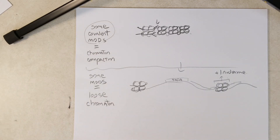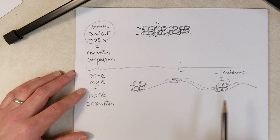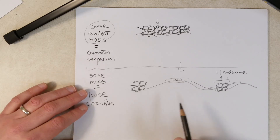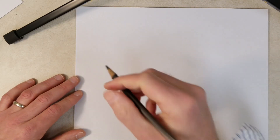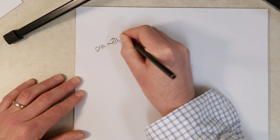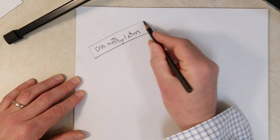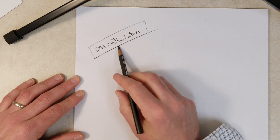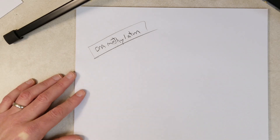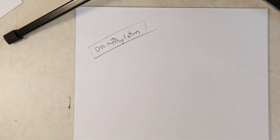That's all we're going to do on the histone code hypothesis — mostly because I don't have specific interesting examples yet, though I hope to add those in future iterations of the course. I do have an interesting example on DNA methylation, which we will talk about in the next video — how DNA methylation controls gene expression in eukaryotes. See you in the next video.